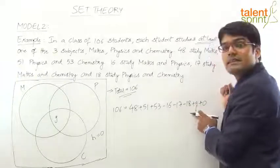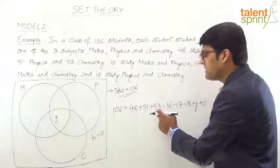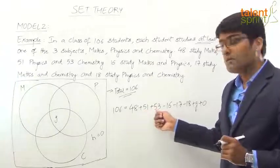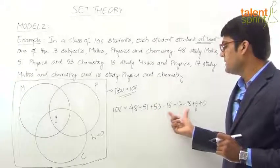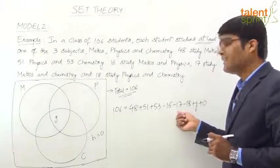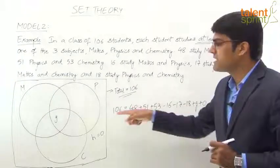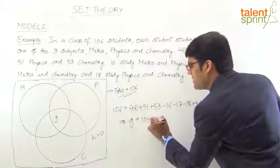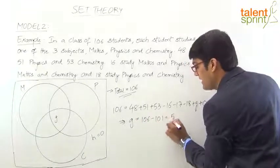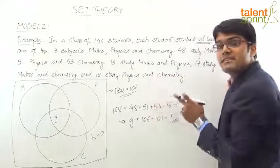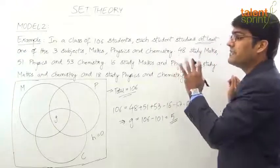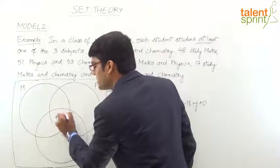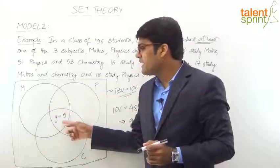We now calculate G. We have 152 − 51 = 101. So G = 106 − 101 = 5. Therefore the number of students who study all three subjects — Maths, Physics and Chemistry — is equal to 5.